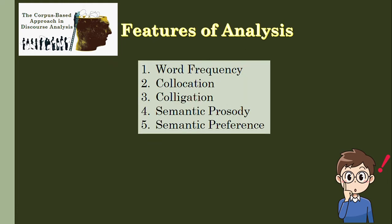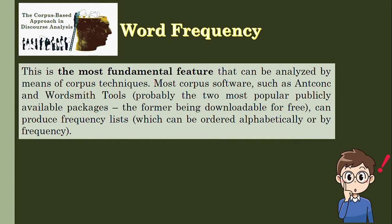The features of corpus-based analysis may be grounded on word frequency, collocation, colligation, semantic prosody, or semantic preference. The first is word frequency, the most fundamental feature that can be analyzed by means of corpus techniques. Most corpus software, such as AntConc and Wordsmith Tools — probably the most popular publicly available packages, with the former being downloadable for free — can produce frequency lists which can be ordered alphabetically or by frequency, depending on the need of the language researcher.